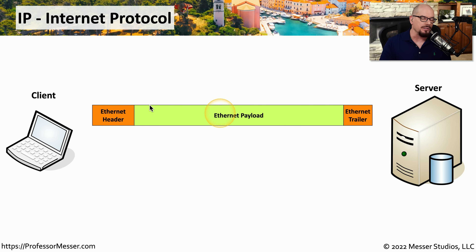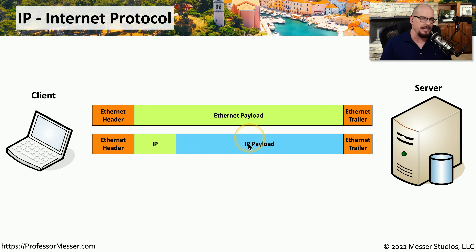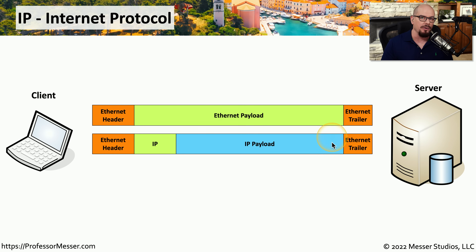In ethernet, we also have a header at the beginning of this particular frame, and an ethernet trailer that's at the end of the frame. This ethernet payload could have anything inside of it, but the most popular protocol we use on our networks is the internet protocol, or IP. So our ethernet payload will have an IP header, and then there will be an IP payload within that particular part of the frame.